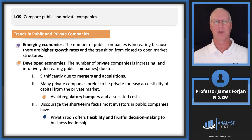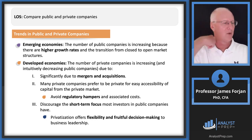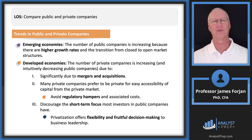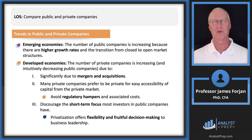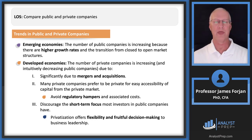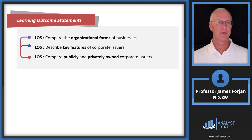Some trends: in emerging economies, the number of public companies is increasing because of higher growth rates. In developed economies, the opposite is true. The Wilshire 5000, which once had over 7,000 stocks in its index, now in the 2020s has only around 3,800 stocks — a shrinking public listing. There are lots of reasons for that, but probably the best reason is onerous regulations. That takes us through our three learning outcome statements.